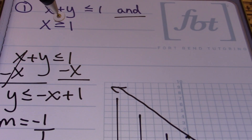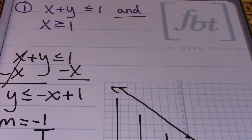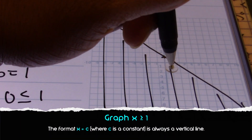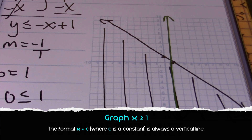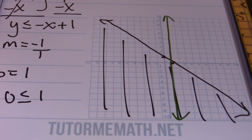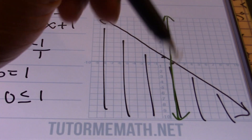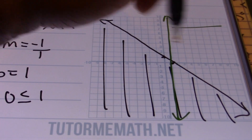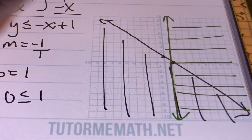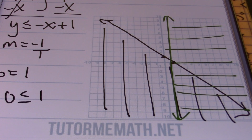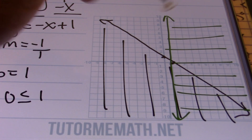We're also graphing x is greater than or equal to 1. That's in the format of a vertical line, and it's going to be a solid line because of the greater than or equal to symbol, going through 1. I'll shade this inequality to the right, because things that are greater than or equal to 1 can be found on the line x equals 1 and to the right of 1. Since this must be an intersection, the solution is the overlap of both inequalities — right here in this area.